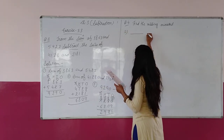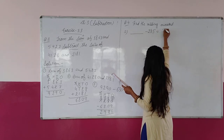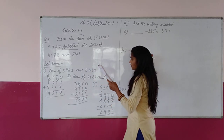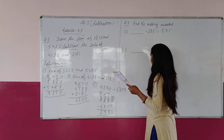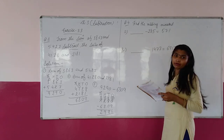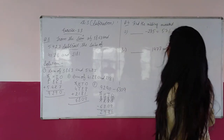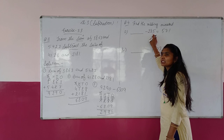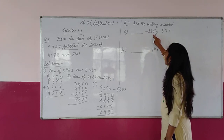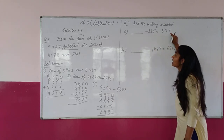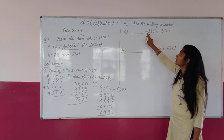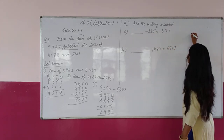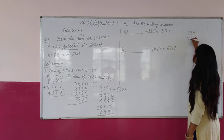Find the missing minuend. Part A: dash minus 285 = 571. Part B: dash minus 1,477 = 6,917. These are given — so what we have to do is find the missing minuend. Minuend always bigger होता है. Subtrahend plus difference add करने से minuend मिलता है. So: 285 plus 571.